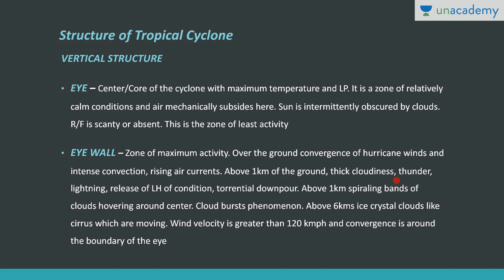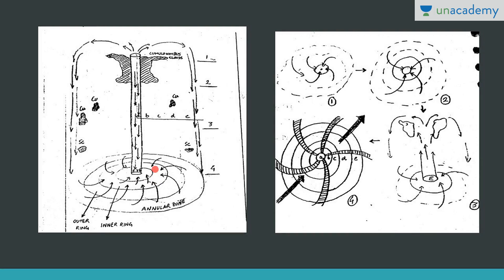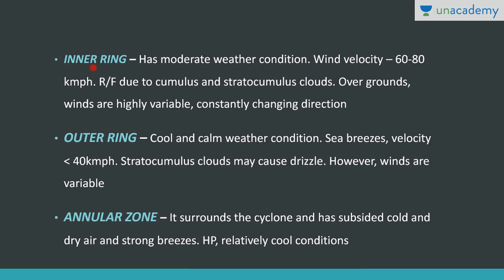In the eye wall zone you will see thick cloudiness, thunder, lightning, cumulonimbus clouds, release of latent heat of condensation, and torrential downpour. Moving away from the eye wall, in the inner ring, we encounter moderate weather conditions. Wind velocity here is 60 to 80 km per hour, and rainfall is due to cumulus and stratocumulus clouds — unlike in the eye wall where rainfall was due to cumulonimbus clouds. Further out in the outer ring, cooler and calmer weather conditions prevail with sea breezes, gradually decreasing velocity.